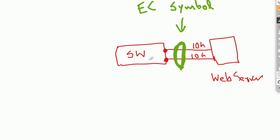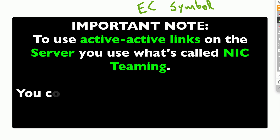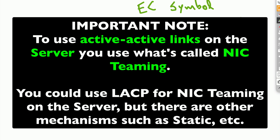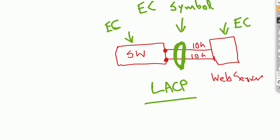When we enable EtherChannel on the switch, on the server we would also have to enable an EtherChannel using LACP — Link Aggregation Control Protocol. Assuming LACP is enabled on the server and on the switch, and they're in the appropriate groups, we can suddenly utilize a full 20 gig worth of capacity between that switch and the server. That's a very powerful technology, especially in data center networking.